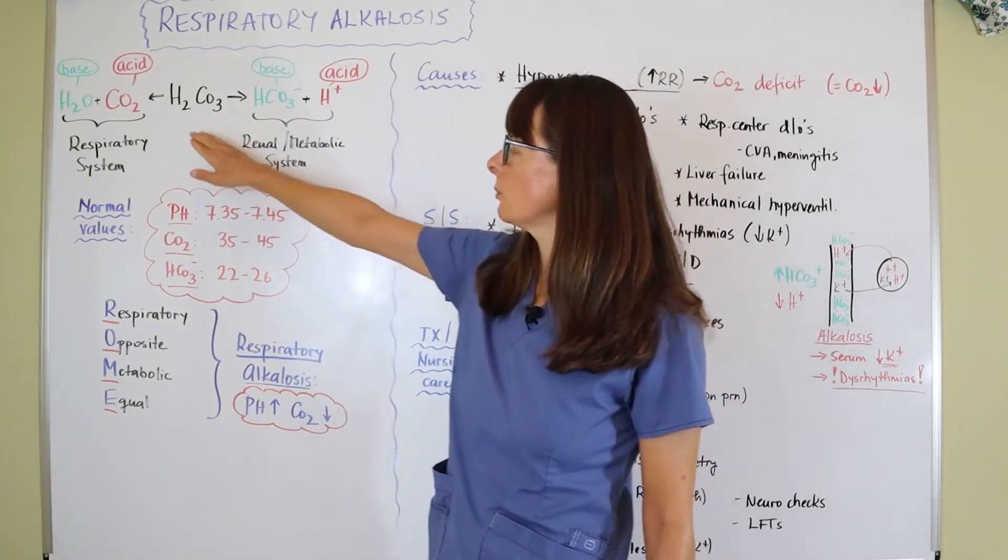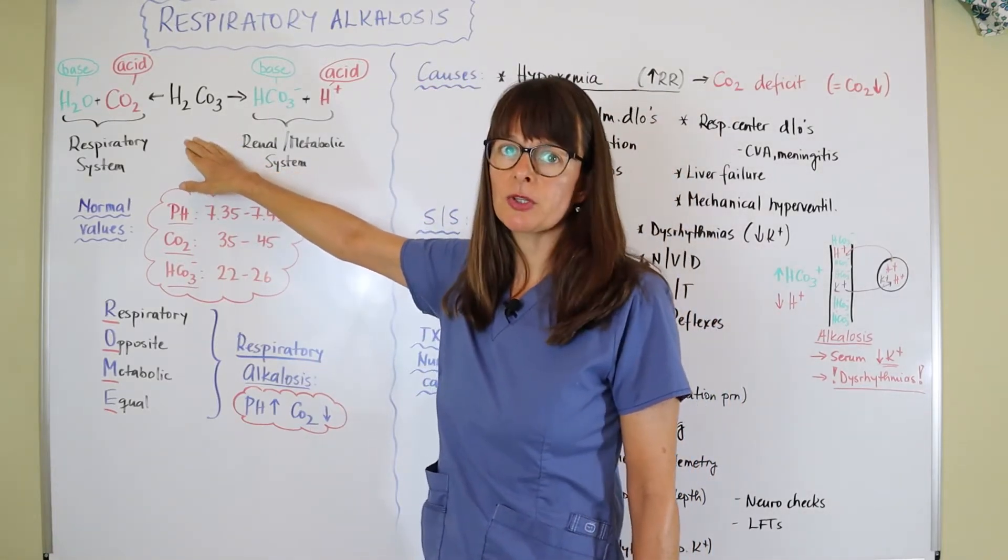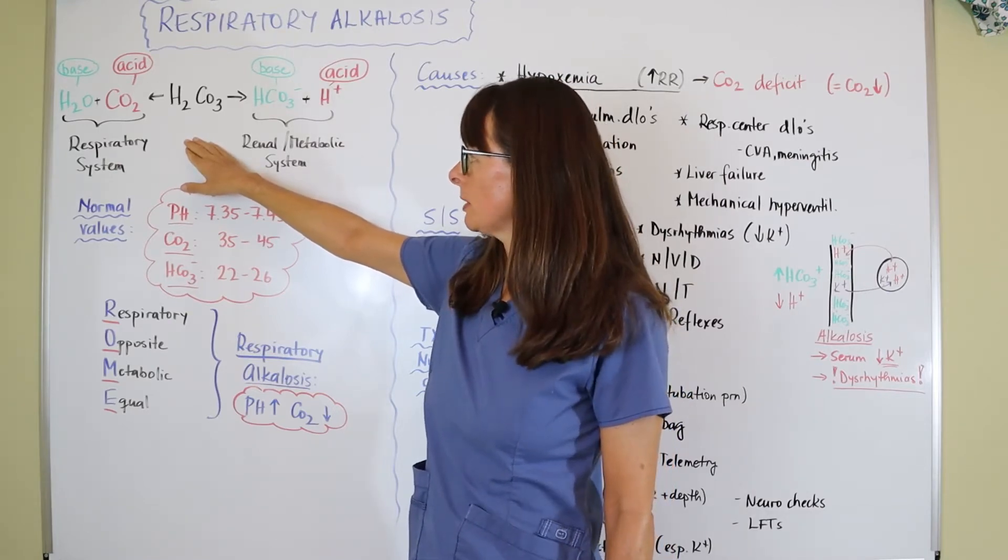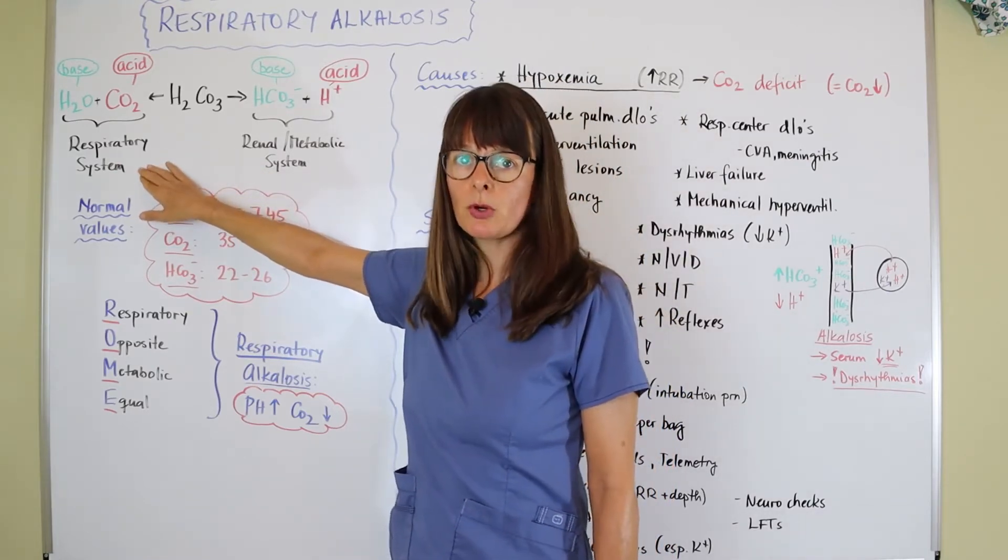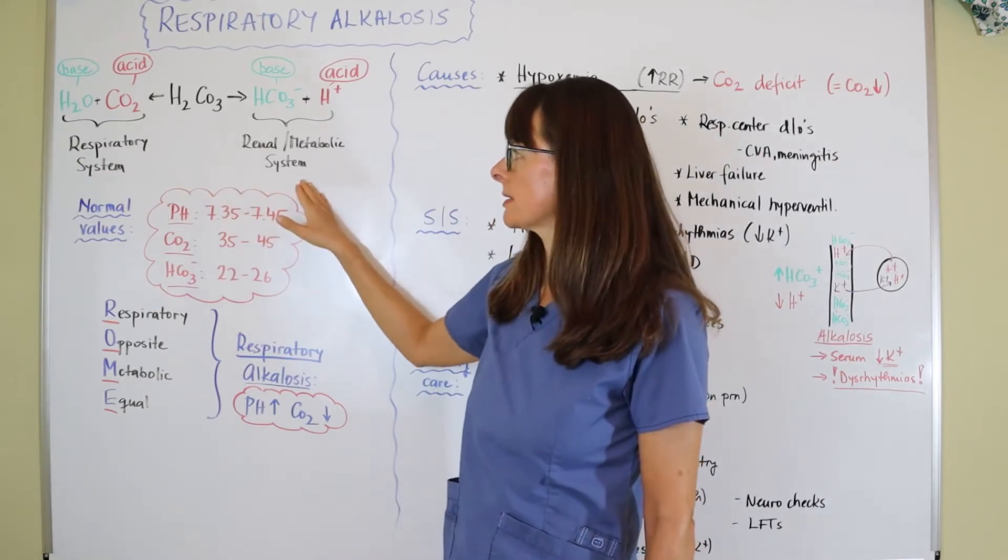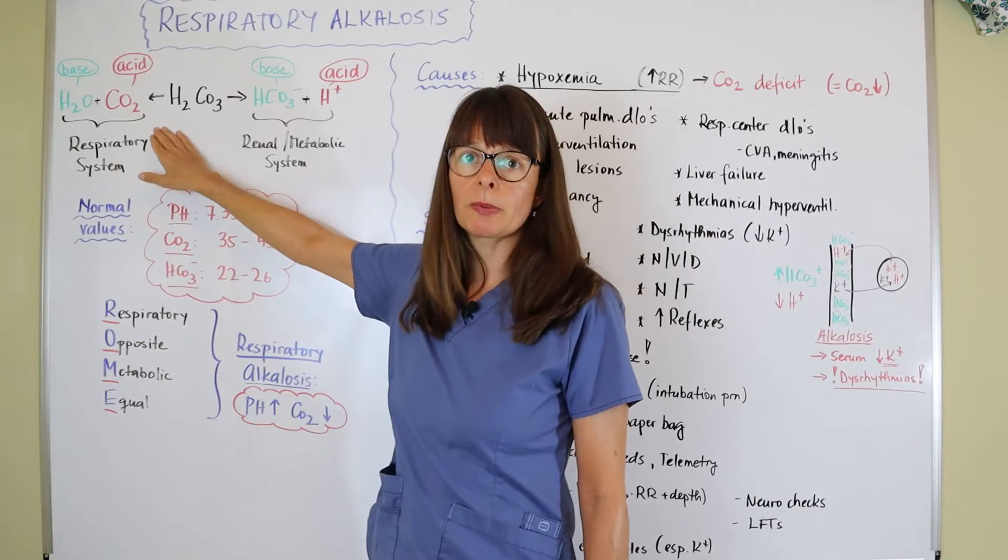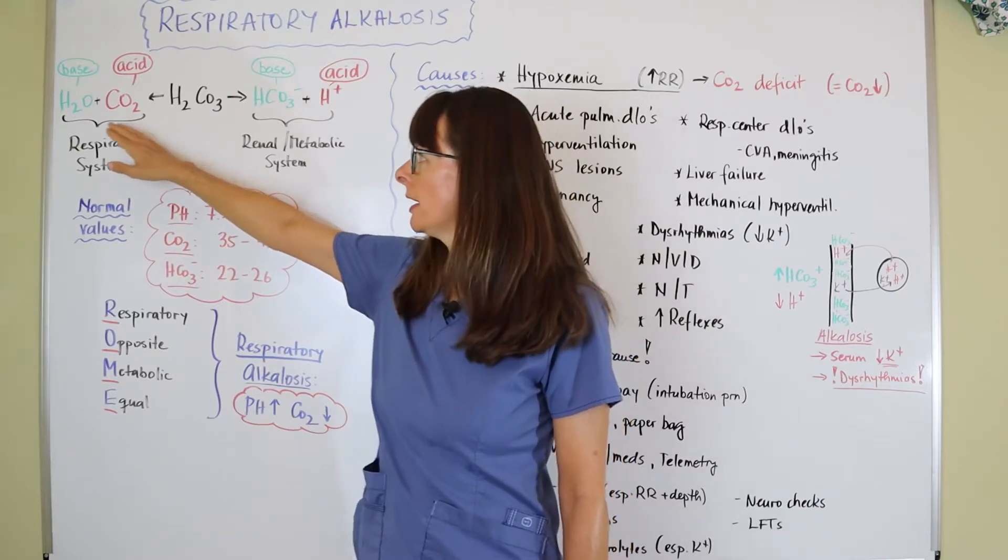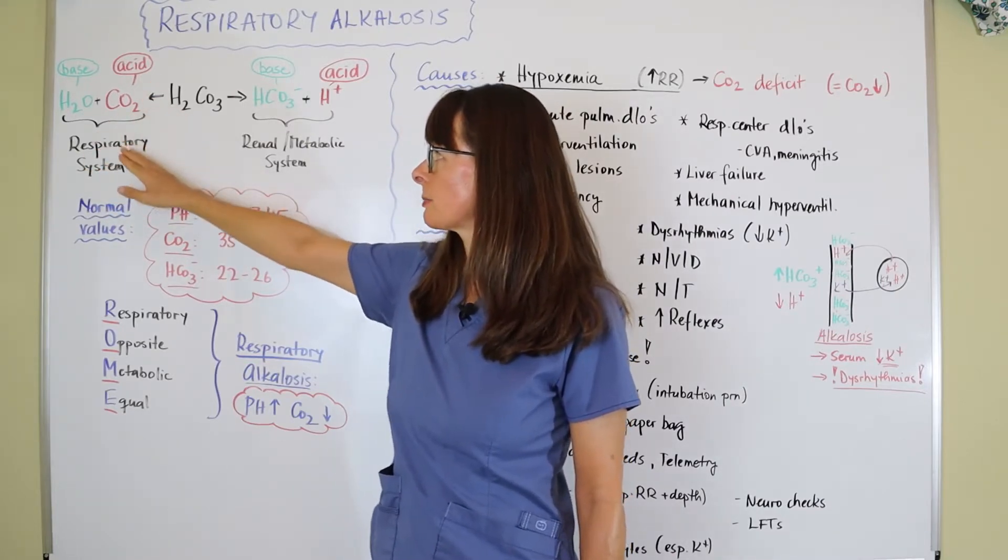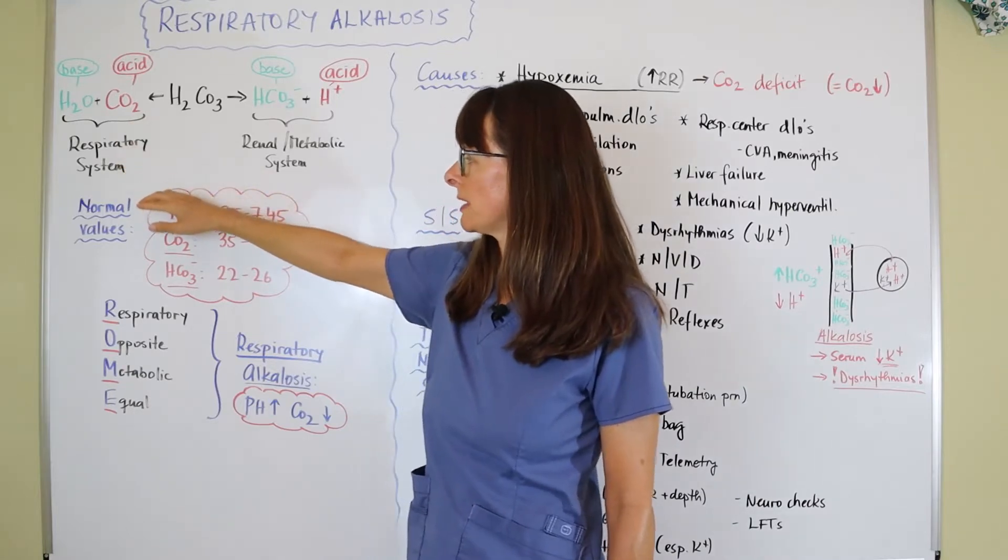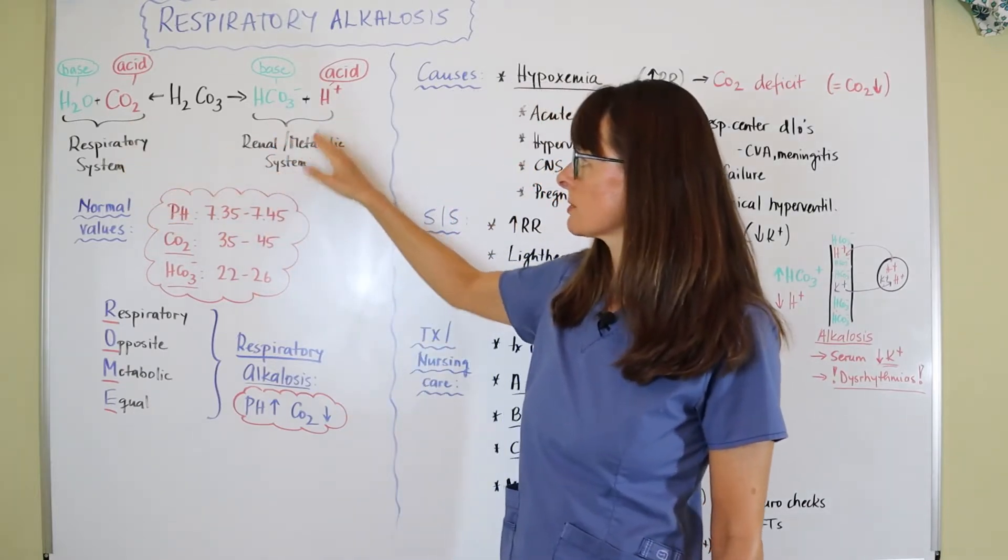For a quick review, in our body we produce carbonic acid, which is H2CO3, that can be broken down by either the respiratory or the renal systems. The respiratory system simply breaks it down into carbon dioxide that we exhale and into water, where the carbon dioxide represents the acid and the water the base.